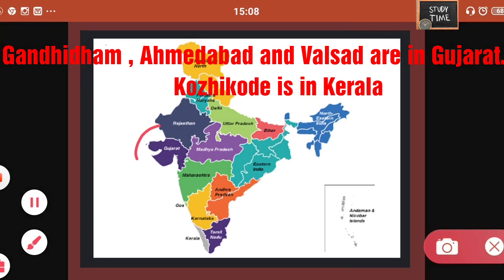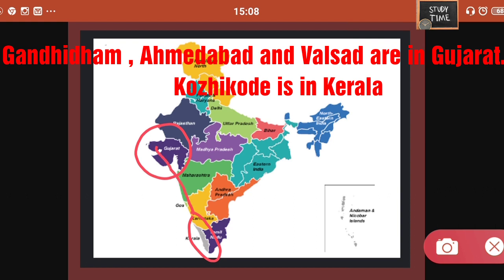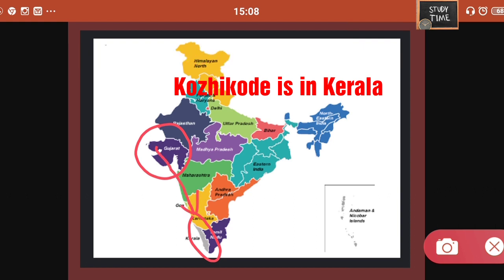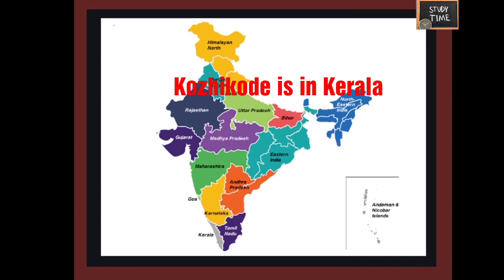This map shows the distance of Omana's journey — from Ahmedabad in Gujarat they were traveling all the way to Kerala.